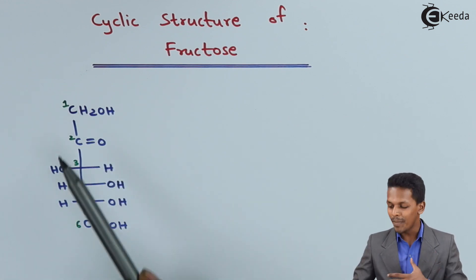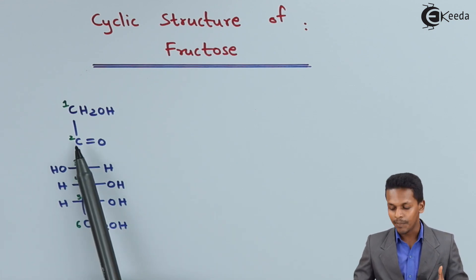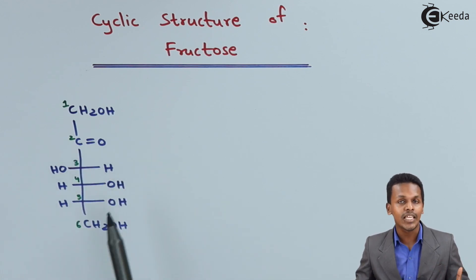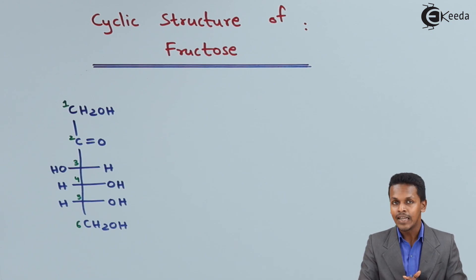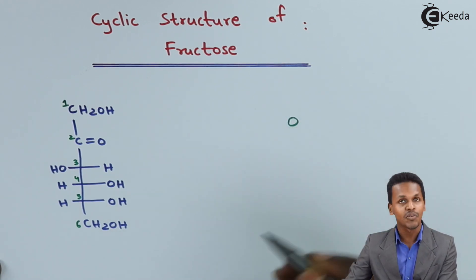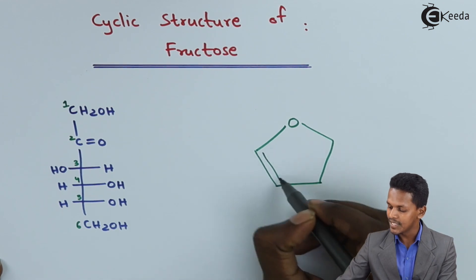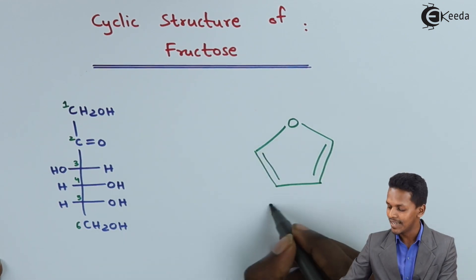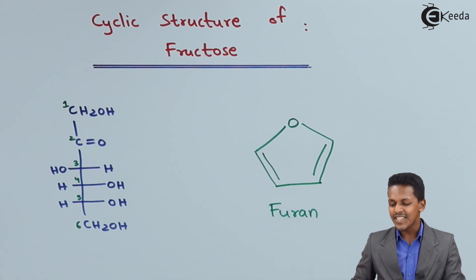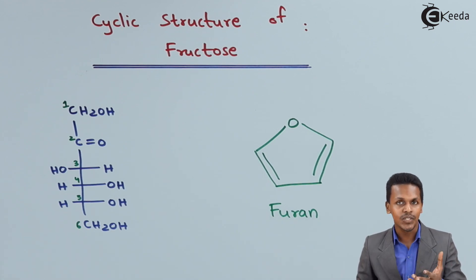We have to form a cyclic structure for fructose. We must understand that the oxygen on carbon 2 and the oxygen on carbon 5 will combine with each other to form a cyclic structure. This cyclic structure is very similar to that of furan, which consists of an oxygen atom with the other ring members being carbon. Our cyclic structure of fructose is very similar to furan, which is why fructose in its cyclic form is known as fructofuranose.